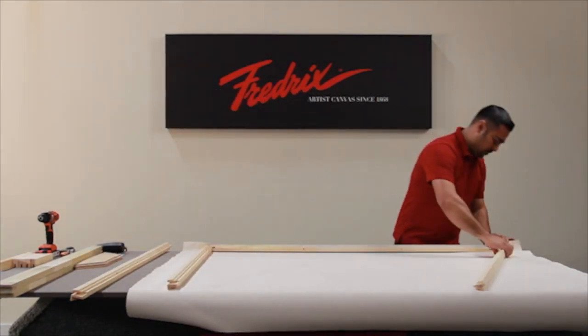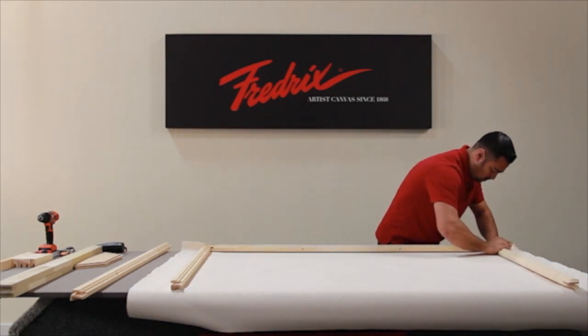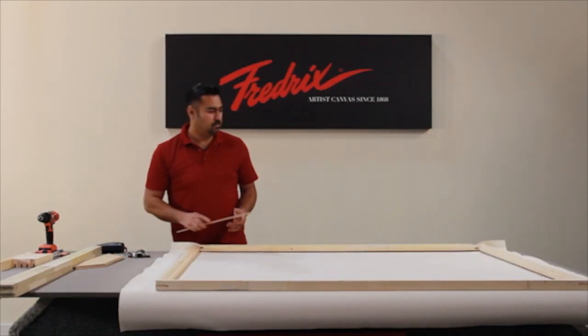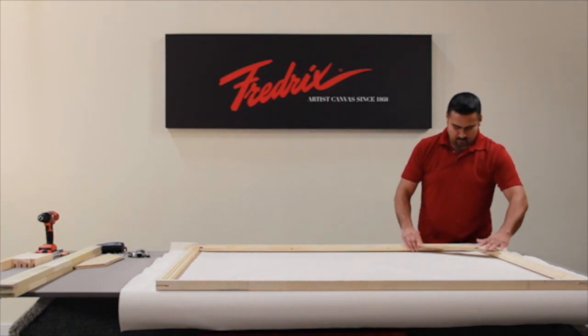Assemble your stretcher bar frame with the three additional stretcher bars, inserting the tongue and grooves in each corner together. There is an additional video on this flash drive that will give you more information on how to build your square-up frame.